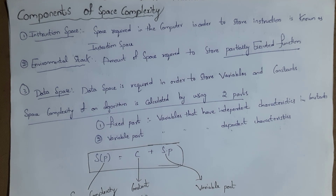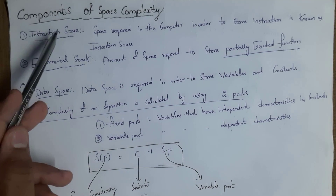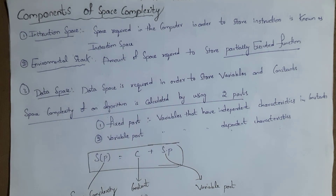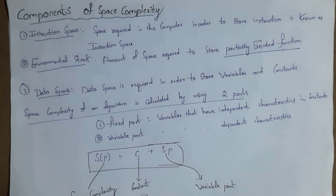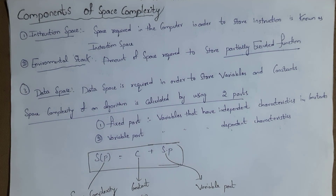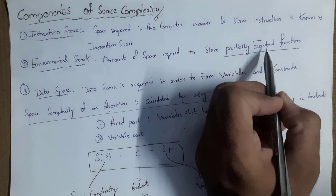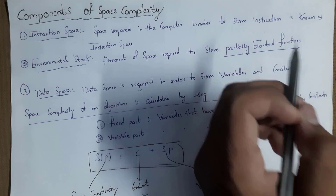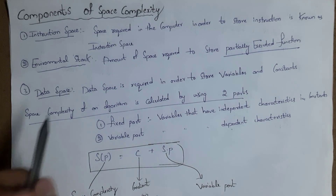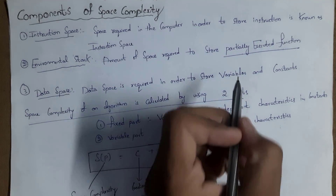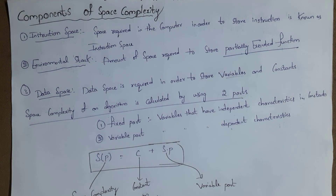There are three components of space complexity. The first is instruction space — the amount of space required in a computer to store instructions. The second is environmental stack — the amount of space required to store functions. The third is data space — the space required to store variables and constants.